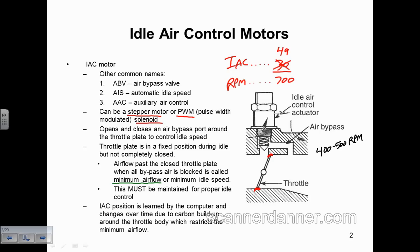On this vehicle, we now have a learned new position — 49 is the new learned number. It's like fuel trim: fuel trim should be at zero, but with a vacuum leak the new fuel trim number is 20%. That's a learned number. When you start the car, where does the computer start the fuel ratio? It starts at 20%. On this car, where does it start the IAC position? At 49.